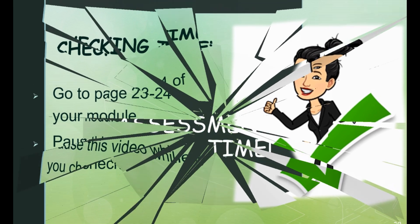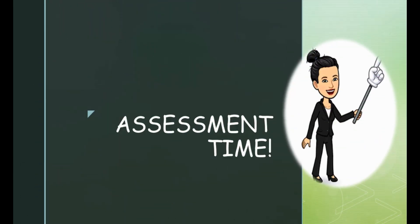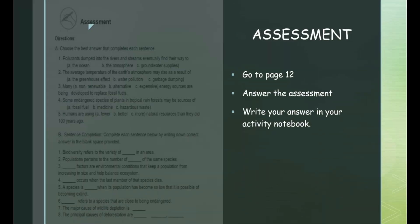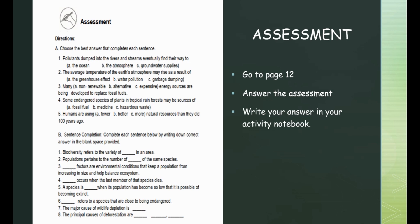It's assessment time! Go to page 12 and answer the assessment. In letter A, choose the best answer that completes each sentence. And for letter B, complete each sentence below by writing down the correct answer in the blank space provided. Write your answers in your activity notebook. Are you ready? Let's go!